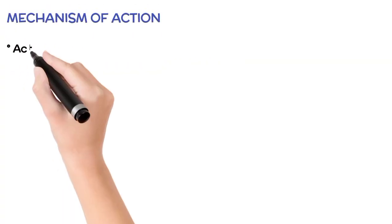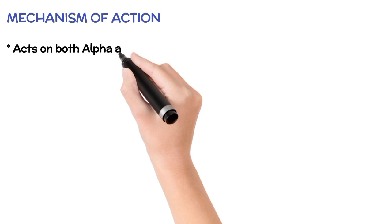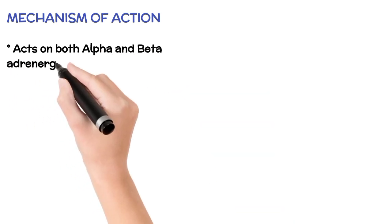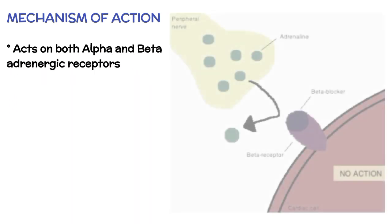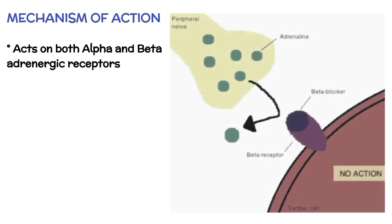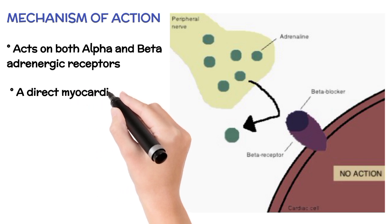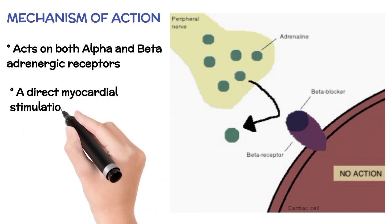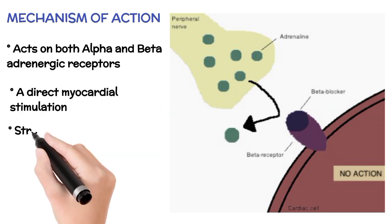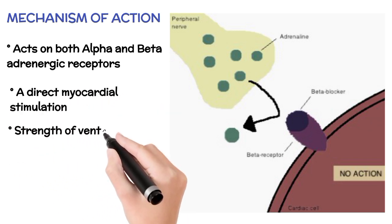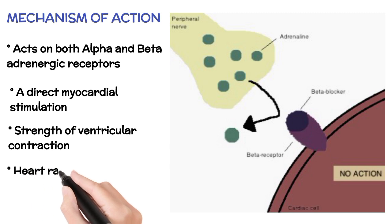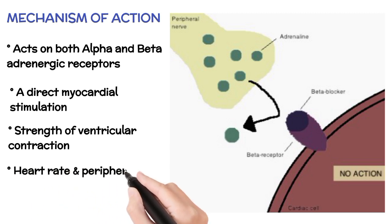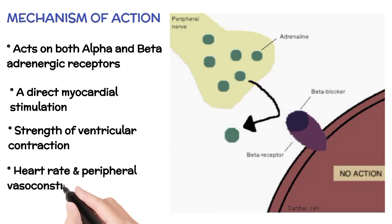Mechanism of Action: Adrenaline acts on both alpha and beta adrenergic receptors. The rise in blood pressure is three-fold: through direct myocardial stimulation that increases the strength of ventricular contraction, an increased heart rate, and peripheral vasoconstriction.